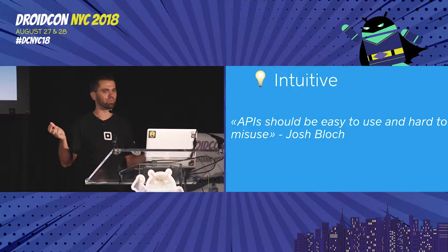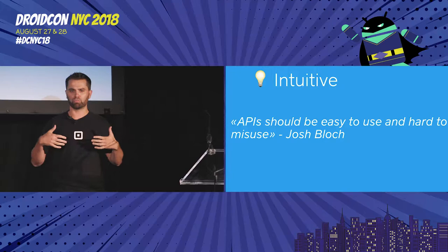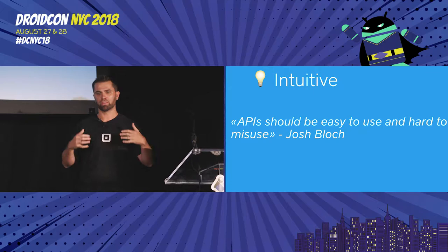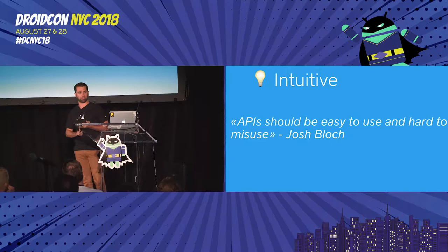We were targeting junior developers — people who just came out of boot camp, who barely know Android and can start building with it. That's one reason we went with Java instead of Kotlin as an API surface — Java is, right now, easier for people to approach. The second part of the quote is 'hard to misuse,' meaning it's hard to make a mistake, and if you do make one, you'll know about it quickly and it'll be easy to fix.